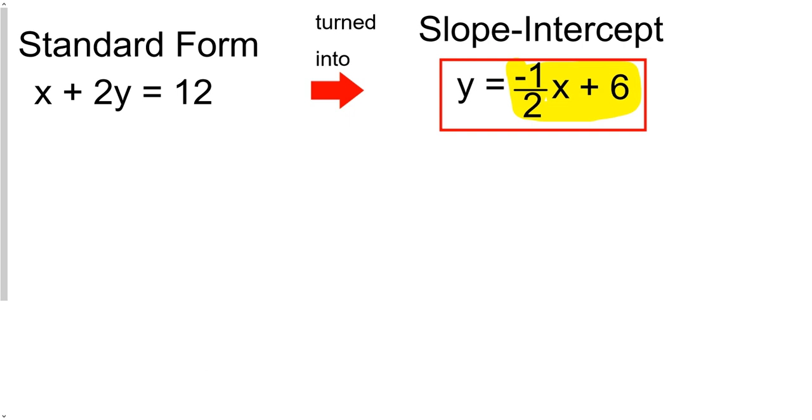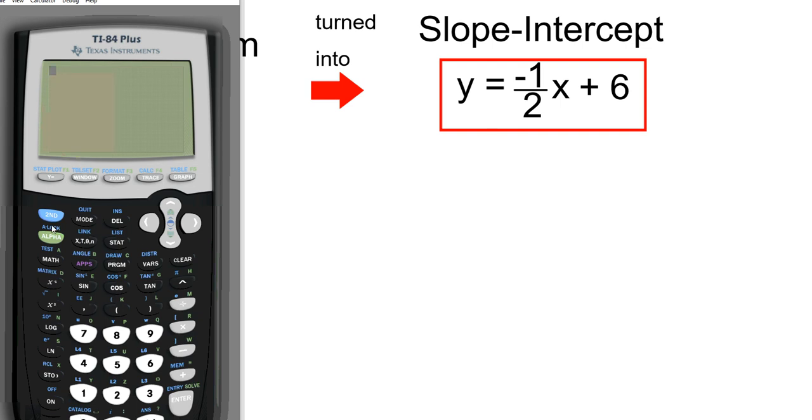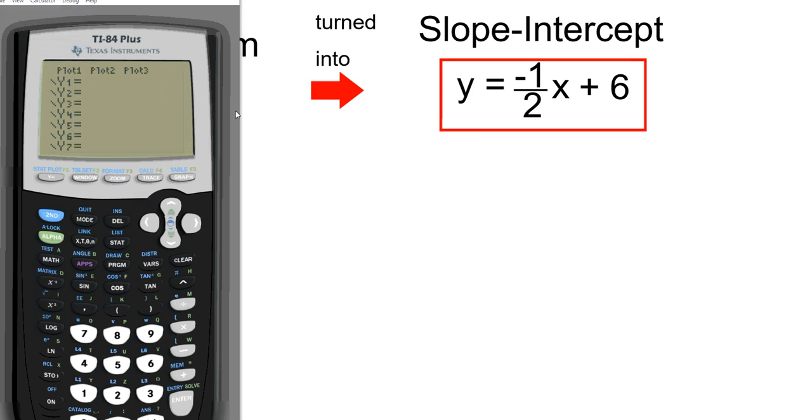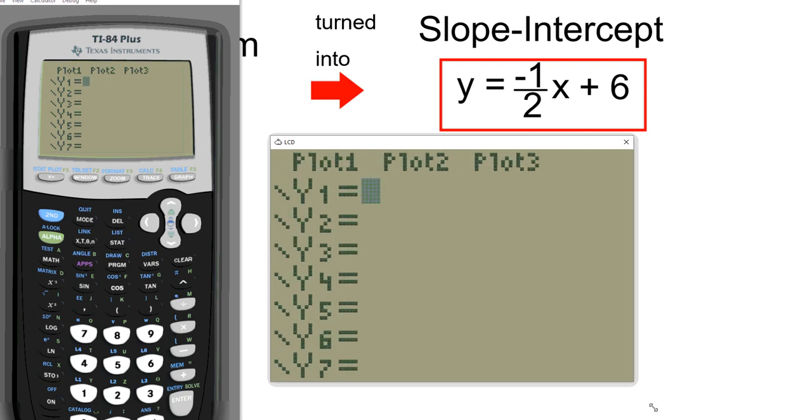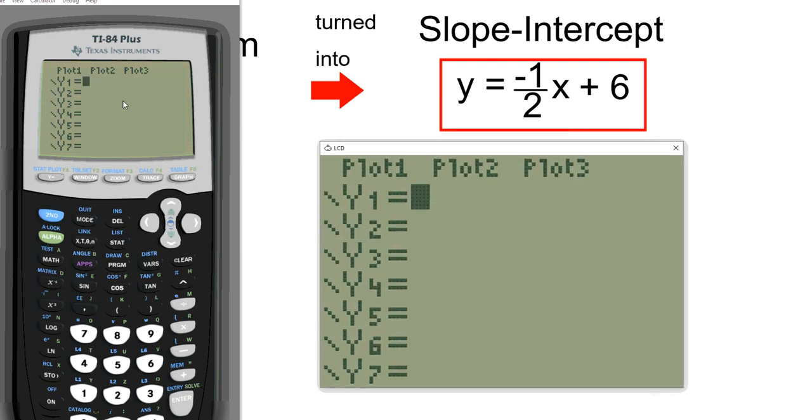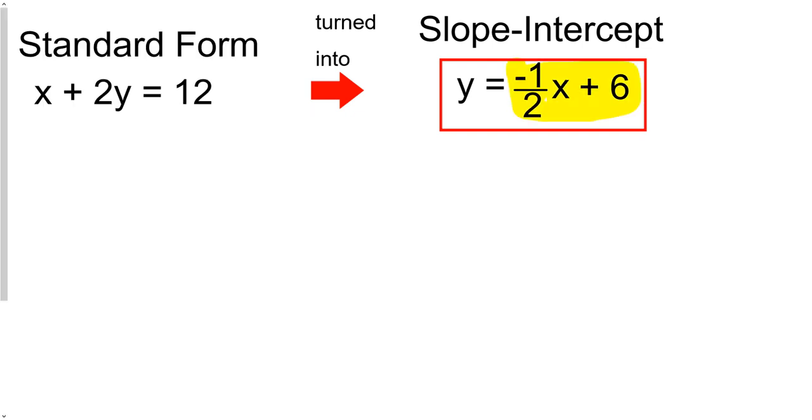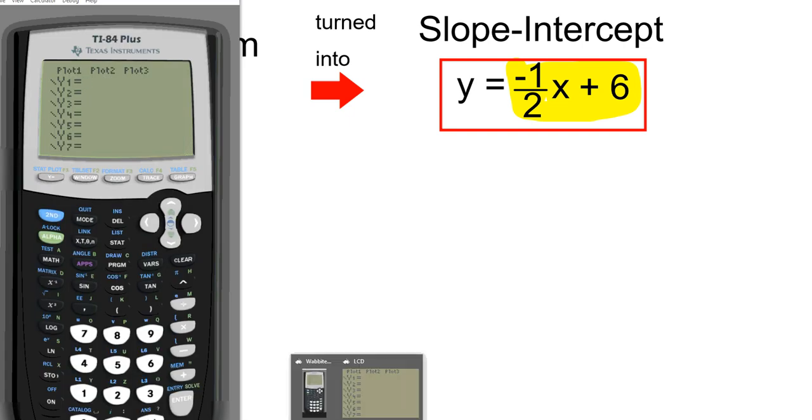So the next thing that we would do is literally pull up our calculator right here, turn it on, and the first thing I want you to do is I want you to just click on this Y equals button right here. And let me go ahead and get a detached LCD screen up here, that way it's just a little bit bigger. So anything that's happening on my calculator right here, it's a little bit bigger for you to see. Now this Y1 field...